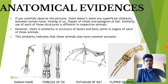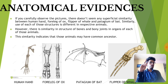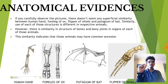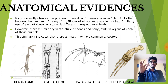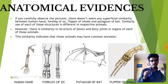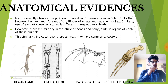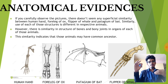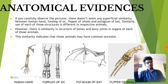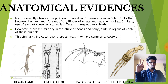Then we come to anatomical evidences. While morphological evidences are based on the external appearance of an organism, anatomical evidences are based on the internal structure — meaning the bone structure of an organism. By looking at the bone joints or bone structure, you can see that organisms had a common ancestor. There are two types of organs for anatomical evidences: homologous organs and analogous organs.